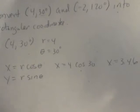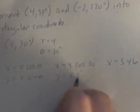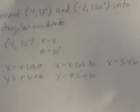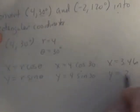Make sure you get that. Now, y is 4 times sine of 30, which equals 2.